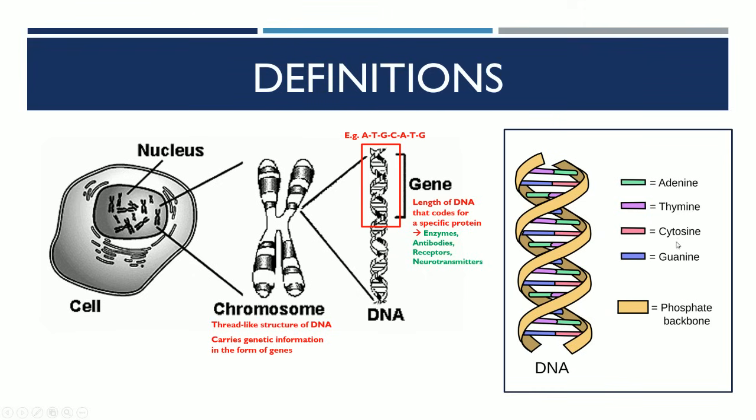The helix is put together by what we call bases. We've got four main bases: adenine, thymine, cytosine and guanine. These bases join from one end to the other to hold the structure together.